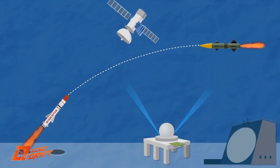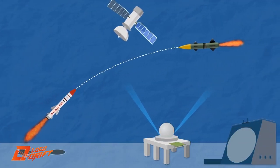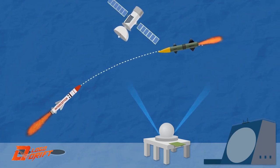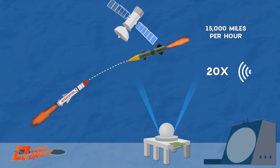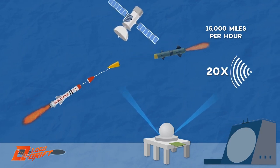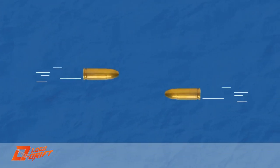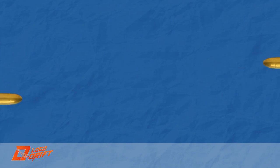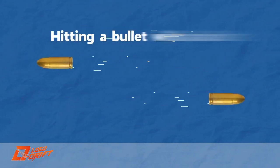One, GMD uses interceptors to attempt to destroy an incoming missile traveling roughly 15,000 miles per hour, or about 20 times faster than the speed of sound. The interceptors are traveling at about the same speed. It's like trying to hit a bullet with a bullet.